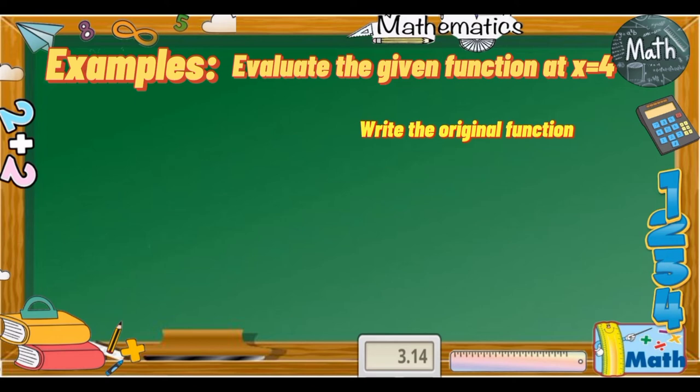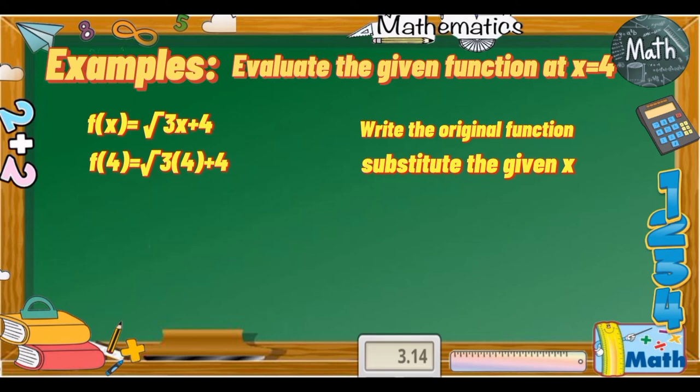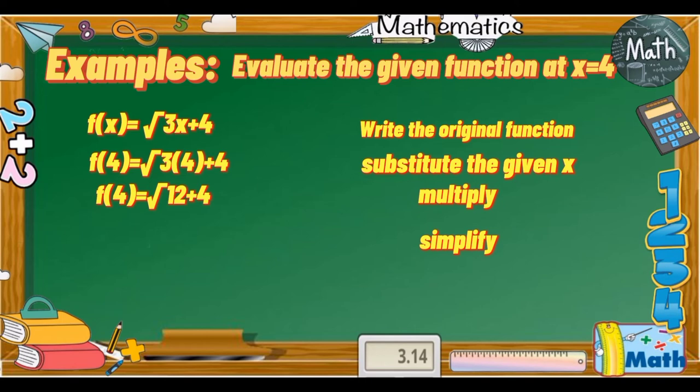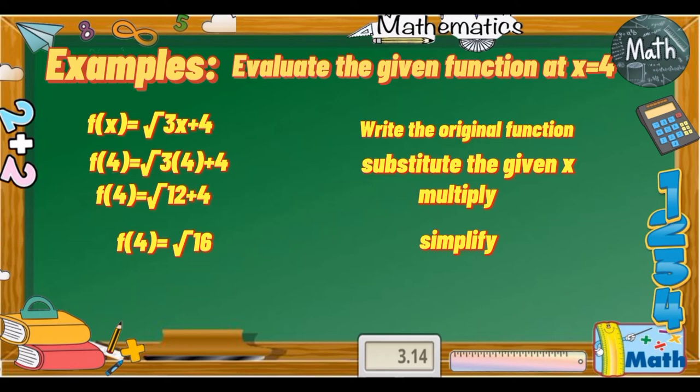Additional example: evaluate the given function f(x) = √(3x + 4) at x = 4. Write the original function, then substitute x with 4: f(4) = √(3 × 4 + 4). Multiply: f(4) = √(12 + 4) = √16. The square root of 16 is 4, so the final answer is f(4) = 4.